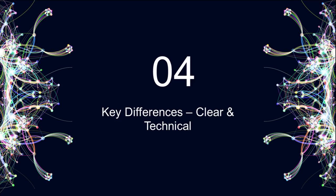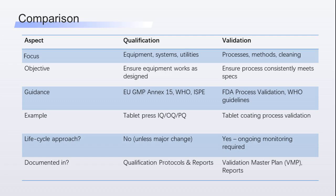Now let's look at the clear technical key differences between qualification and validation. First, focus: qualification deals with equipment, systems, and utilities — like your tablet press or water system — while validation focuses on processes and methods, for example coating tablets or cleaning tanks. Second, objective: qualification checks if equipment works as designed; validation ensures the process consistently meets product specs. Third, guidance: qualification follows EU GMP Annex 15, WHO, and ISPE; validation is driven by FDA process validation guidance and WHO guidelines.